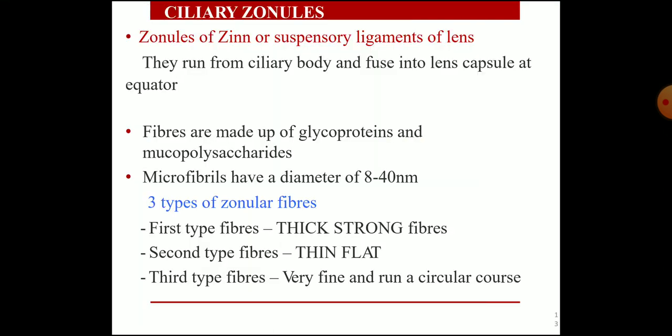Ciliary zonules — the zonules of Zinn or suspensory ligaments of the lens — run from the ciliary body and fuse into the lens capsule at the equator. Zonular fibers are made up of glycoproteins and mucopolysaccharides. Microfibrils have a diameter of 8 to 40 nanometers. There are three types of zonular fibers: thick and strong fibers (type 1), thin and flat fibers (type 2), and very fine fibers that run a circular course (type 3).